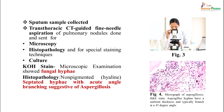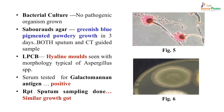On microscopic examination with KOH stain, septate fungal hyphae were seen very clearly. Histopathology similarly showed septate hyphae with acute angle branching. Bacterial culture showed no organism growth. On the fungal medium Sabouraud's dextrose agar, a greenish-blue pigmented powdery growth was seen within three days, and both the sputum and CT-guided samples grew the same organism.